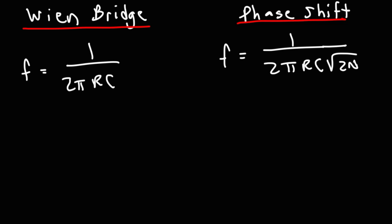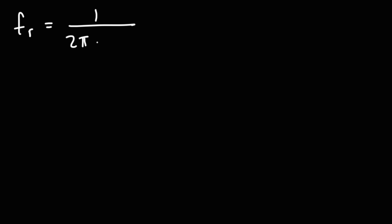There are some other oscillators out there, like the negative resistance oscillator and other examples too. Before ending this video, I want to talk about how we can derive the formula for the resonant frequency of an LC network.